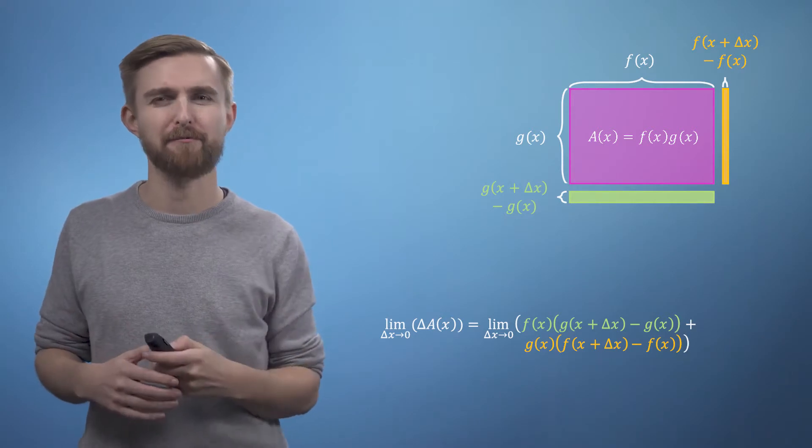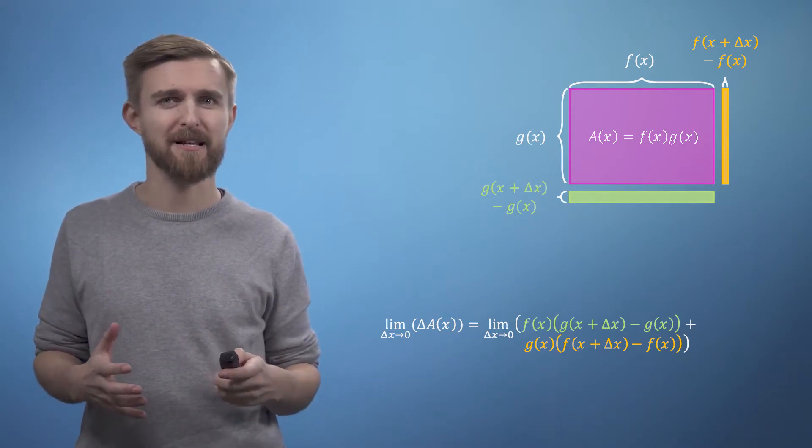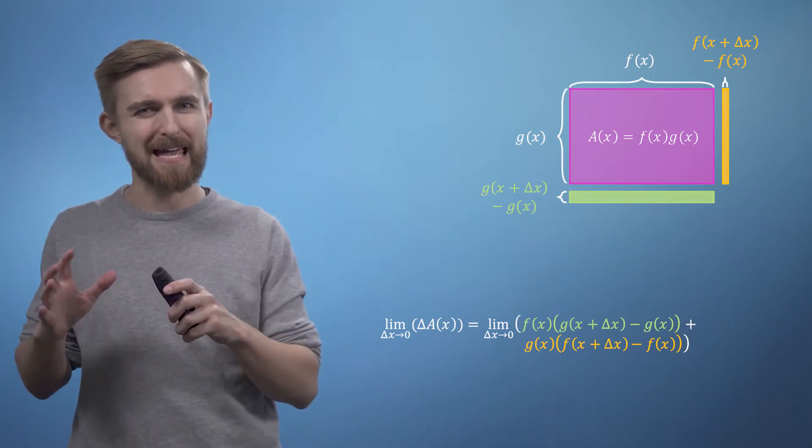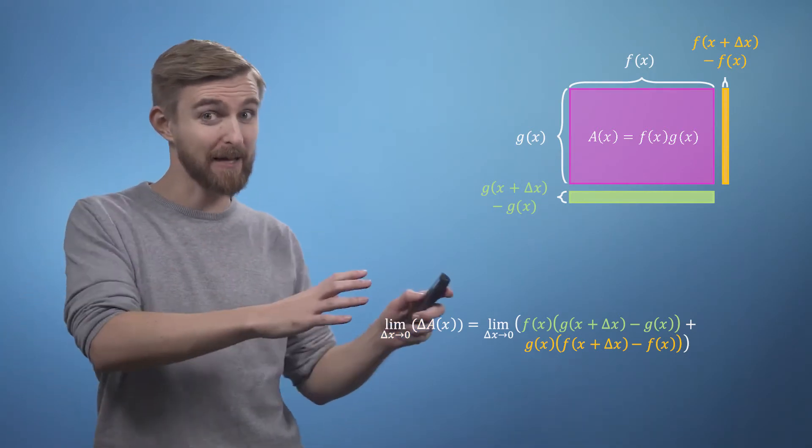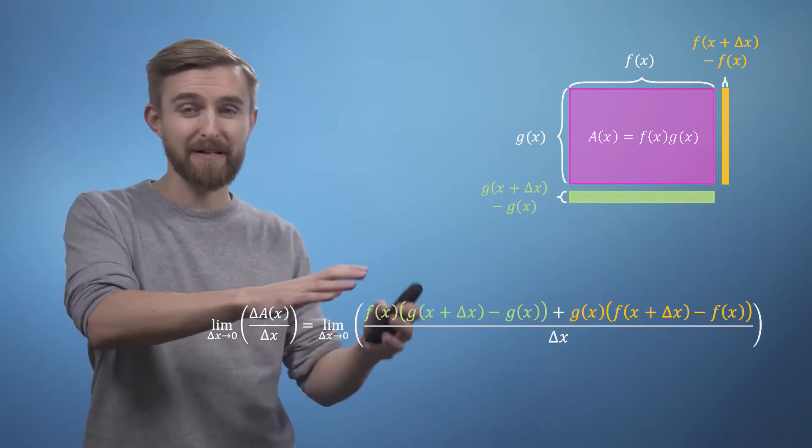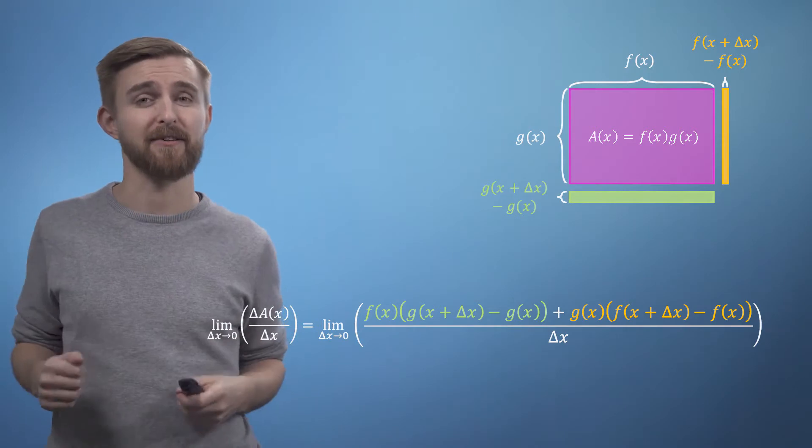Now that we've got our expression for approximating delta a, we return to our original question. What is the derivative of a with respect to x? So we want the limit of delta a divided by delta x, i.e. rise over run, which means we also need to divide the right hand side by delta x.